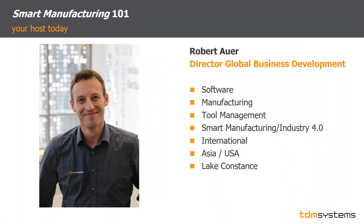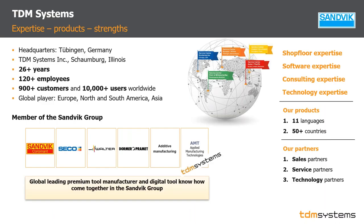Before we start, I want to answer a question that came up in recent webinars: who is TDM? TDM Systems is the leading software provider for managing tool data in the metal cutting industry. We're headquartered in Tübingen, southern Germany — south of Stuttgart — with a subsidiary in Schaumburg, near Chicago, and sales and service locations and partners around the world. We are a member of the Sandvik Group, which gives us access to know-how from internationally leading tool manufacturers. However, TDM is agnostic — we're an open software. We don't only manage Sandvik tools; we manage tools, period. We even create tool catalog data for some of Sandvik's competitors.